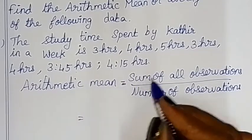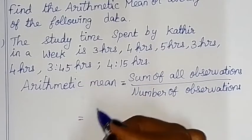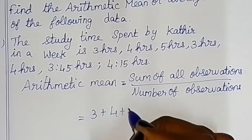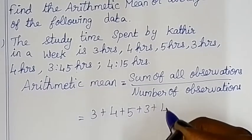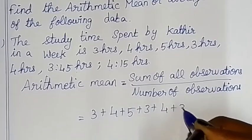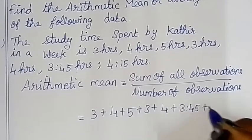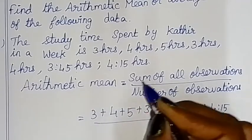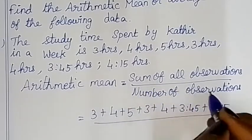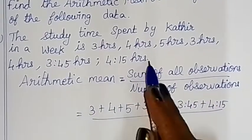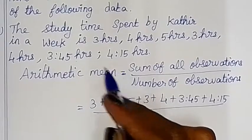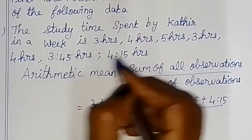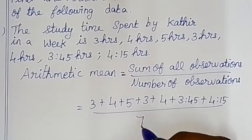So this is equal to the sum of all observations. The values added are: 3 plus 4 plus 5 plus 3 plus 4 plus 3 hours 45 minutes plus 4 hours 15 minutes, divided by the number of observations, which is 7 days. One week is over 7 days, so we have to divide.